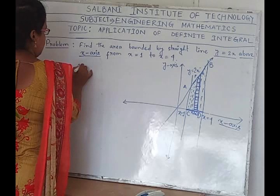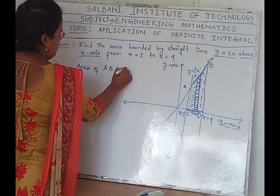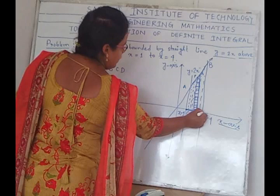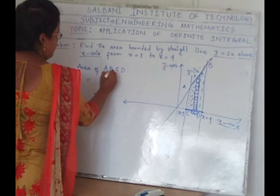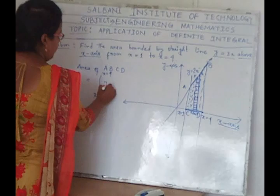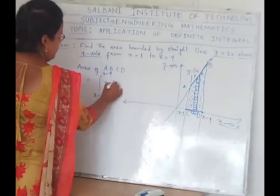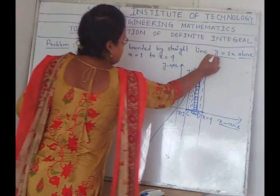So the area of region ABCD equals the integral from x equals 1 to x equals 4 of y dx, where the value of y is 2x, as given in the problem. So the area equals the integral from 1 to 4 of 2x dx.